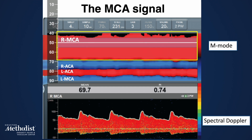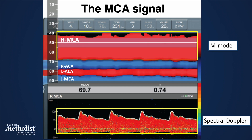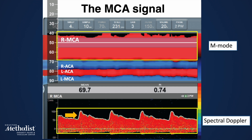The spectral waveform is found underneath the M-Mode on the TCD screen. The MCA's spectral waveform normally displays low-resistance vessel characteristics, meaning there is continuous, uninterrupted blood flow during diastole. In a healthy individual, the upstroke part of the waveform shows a rapid acceleration during systole, followed by a stepwise deceleration, and a positive end-diastolic flow.